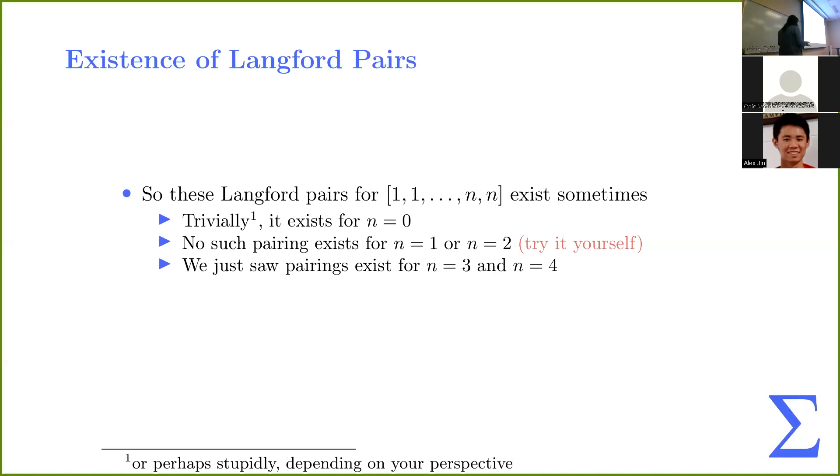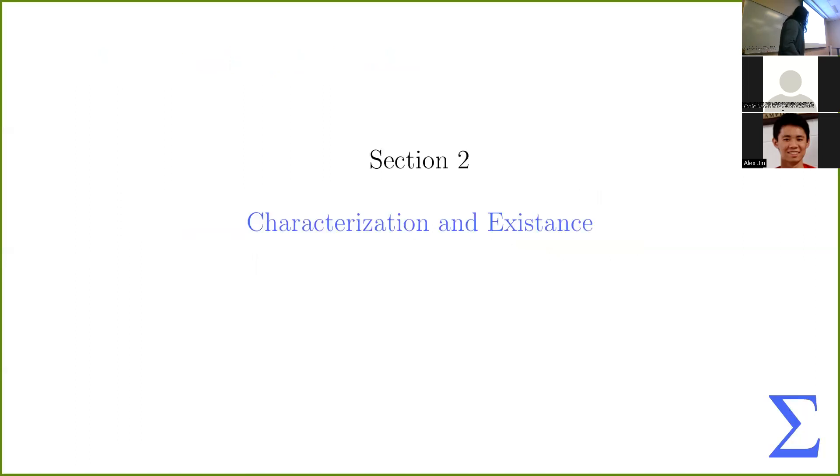We just saw pairings exist for n is equal to three and four. Can we characterize, maybe, exactly for what n we can find pairings, whether even one exists, let alone multiple? And so here's a high-level overview of what we're going to do. We're going to show that if a pairing exists for a given n, then that n must satisfy some sort of characteristic. And then we're going to show that for all n that satisfy the characteristic, here's a way to generate a pairing.